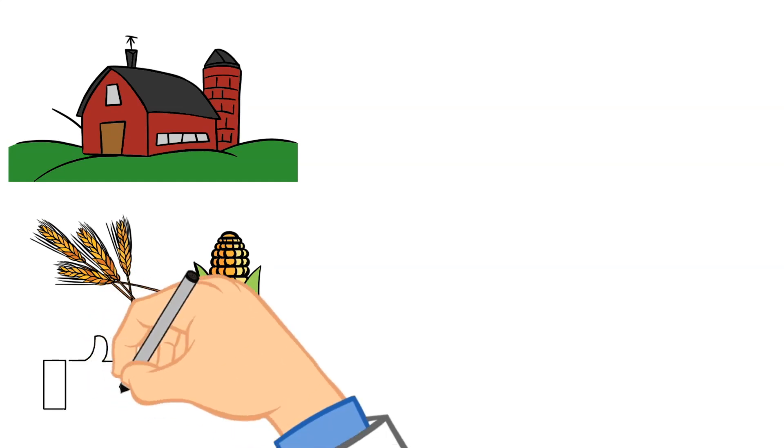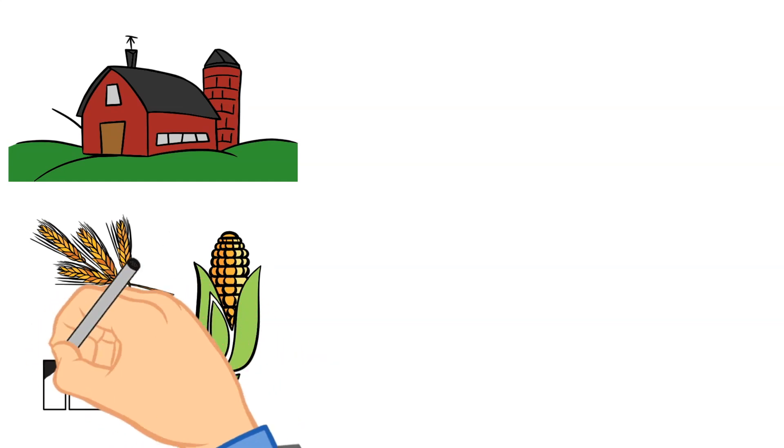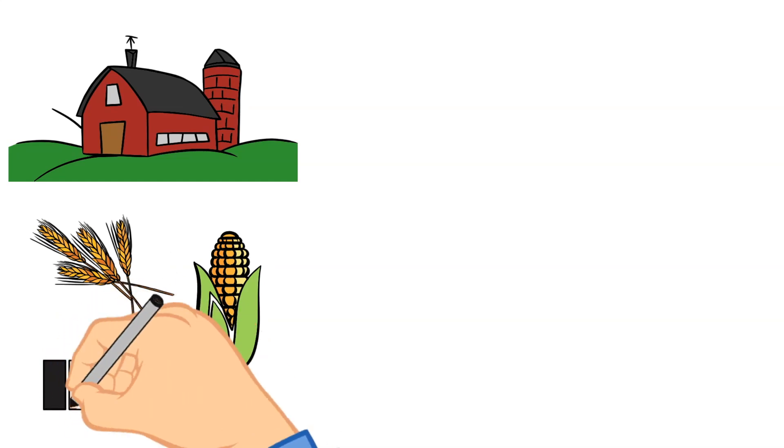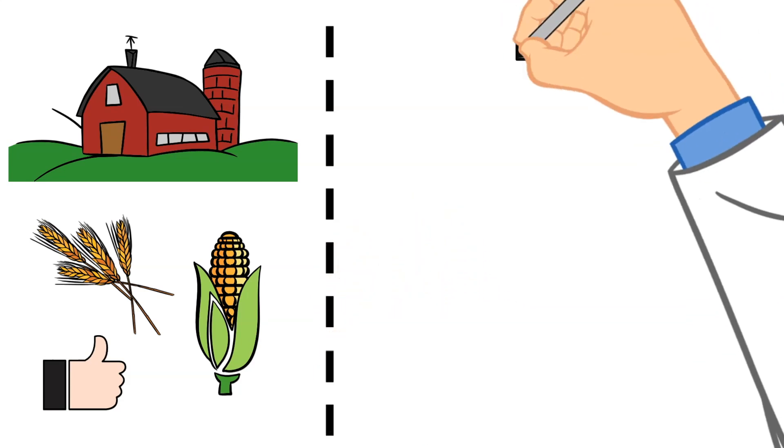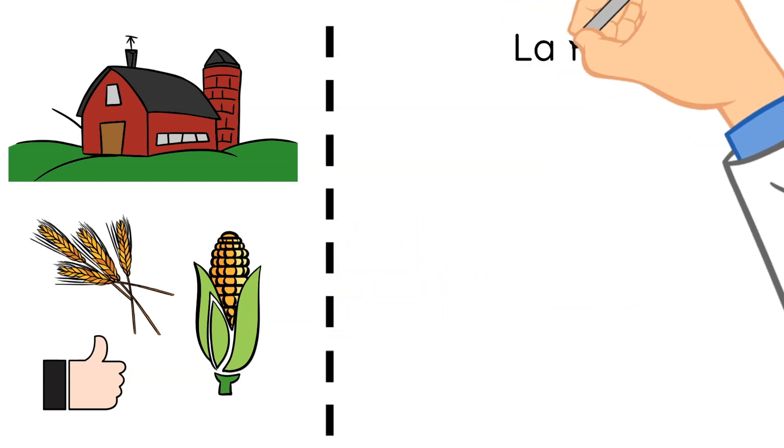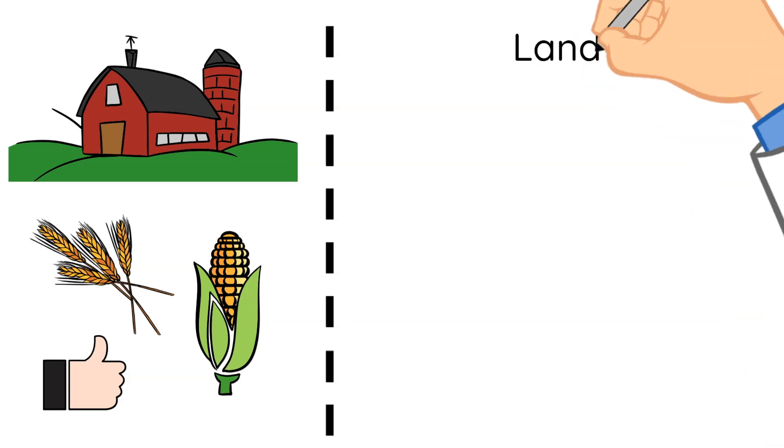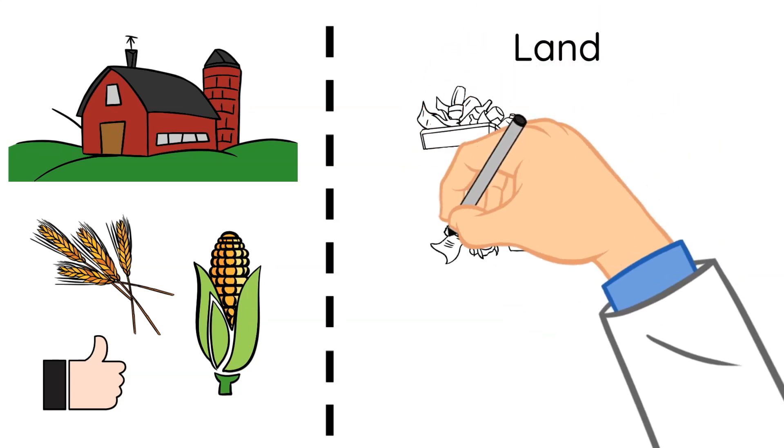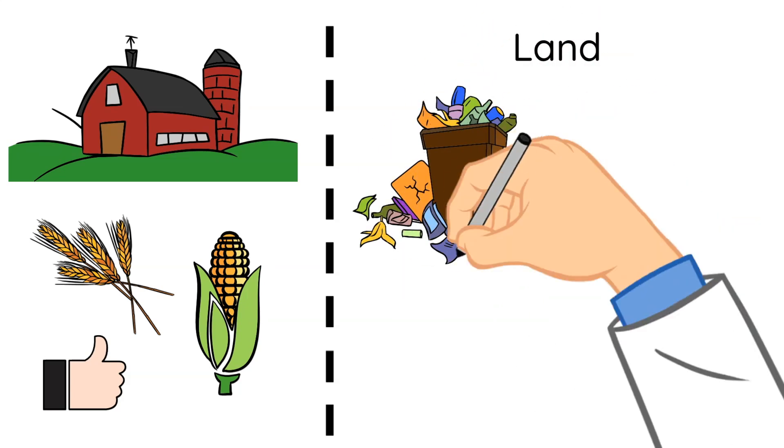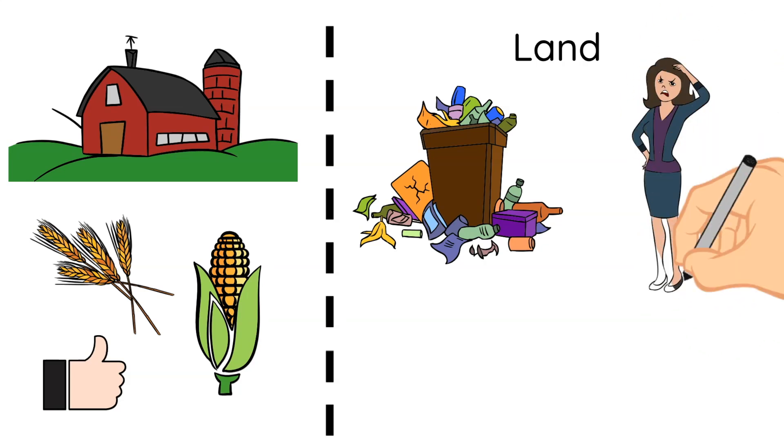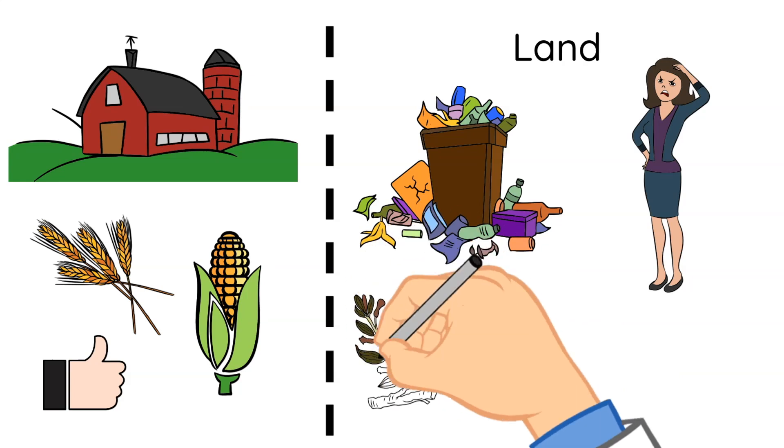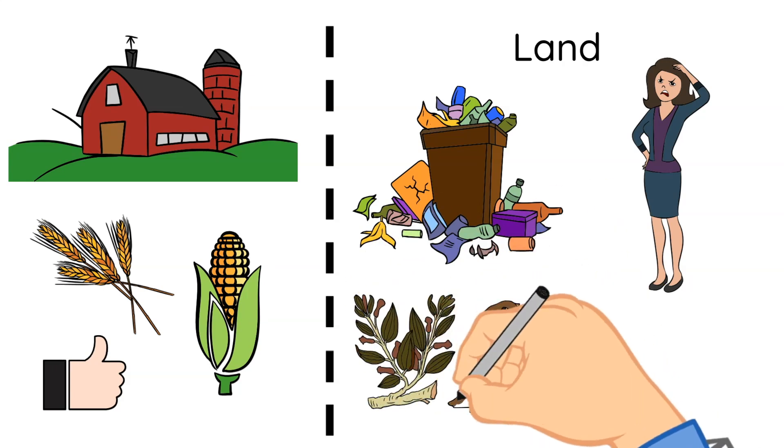Now, it's important to note that these chemicals that farmers spray are very important for the food production. Next up, let's talk about land pollution. Land pollution can happen when garbage is thrown onto the ground. This is a form of pollution. Litter is not pleasing to the eye and can destroy homes of plants and animals.